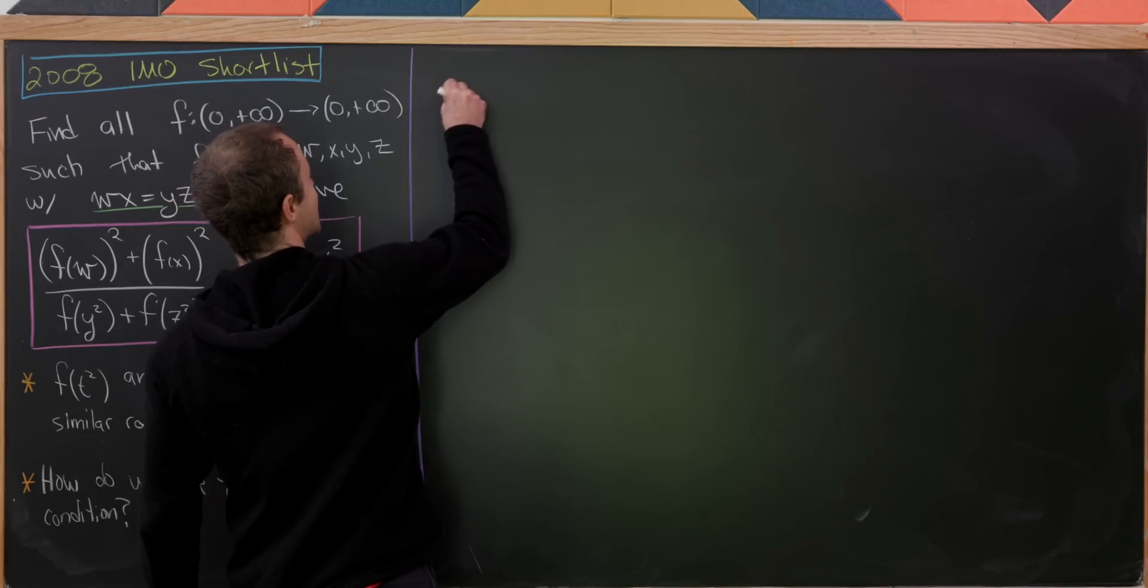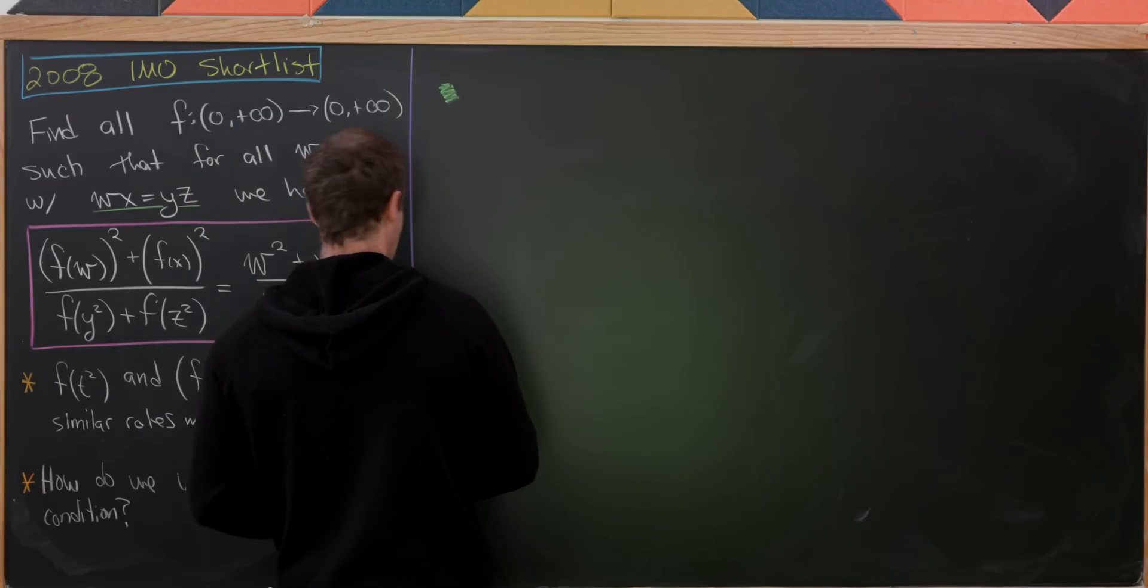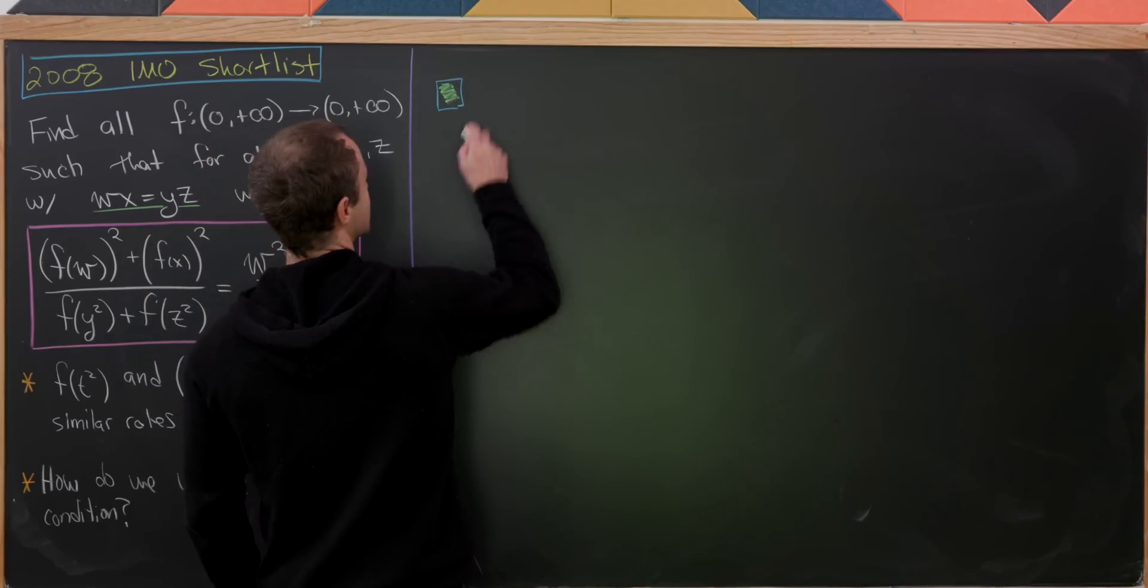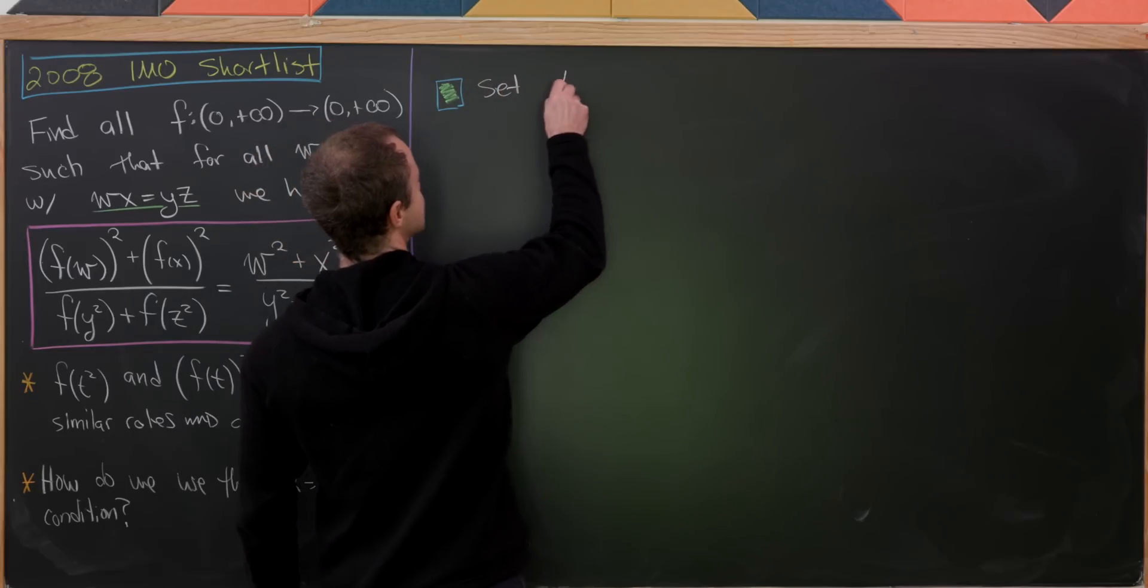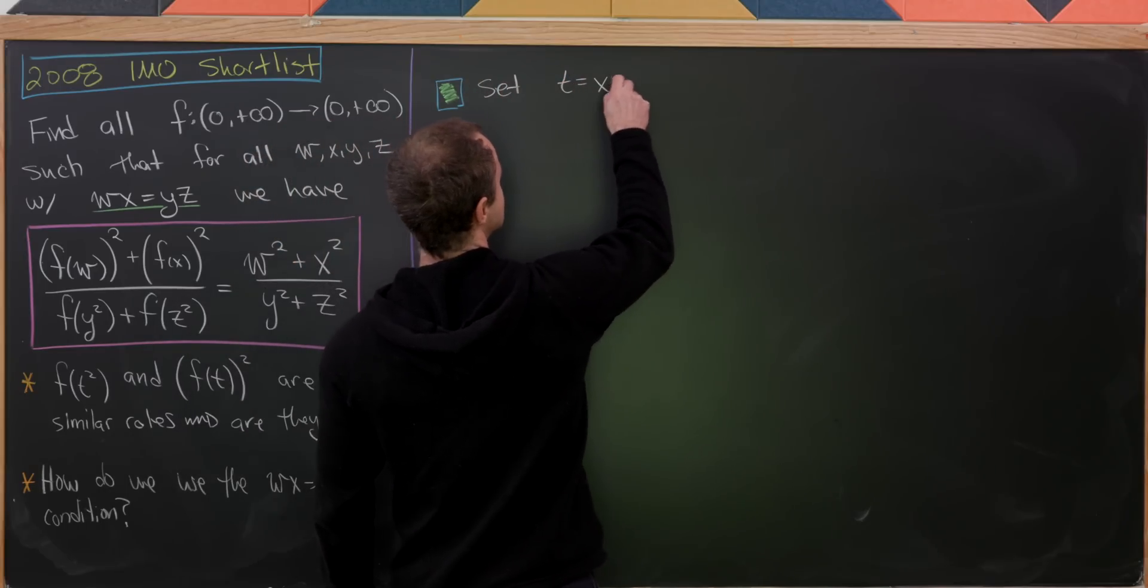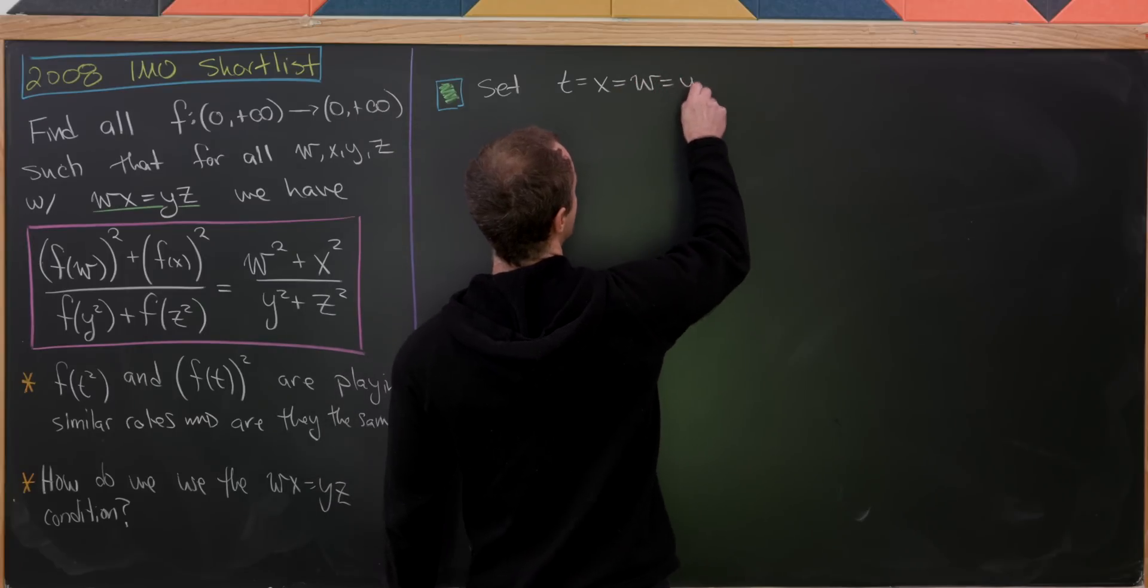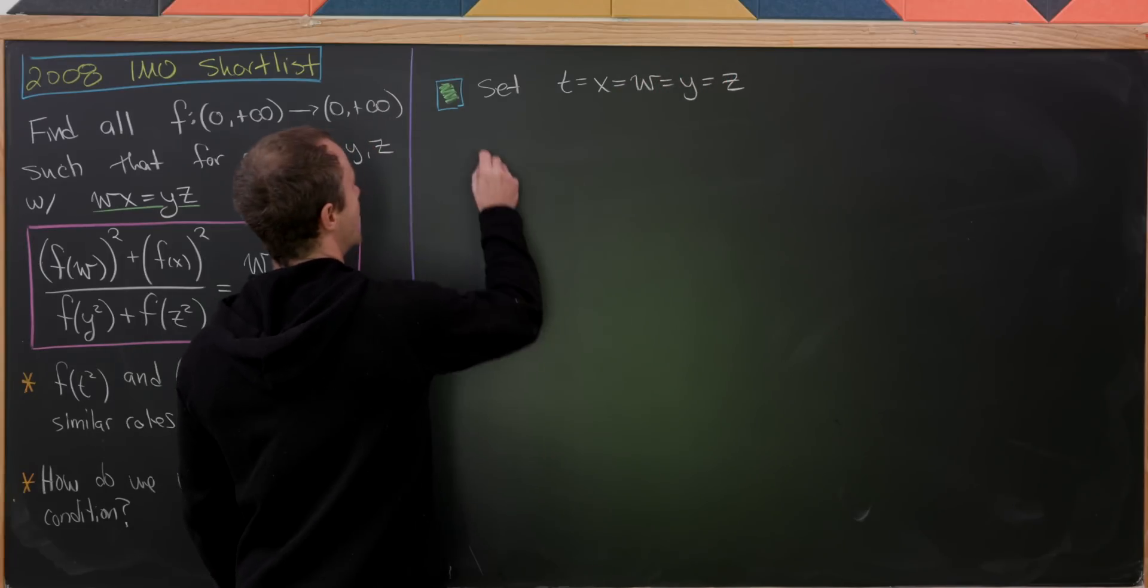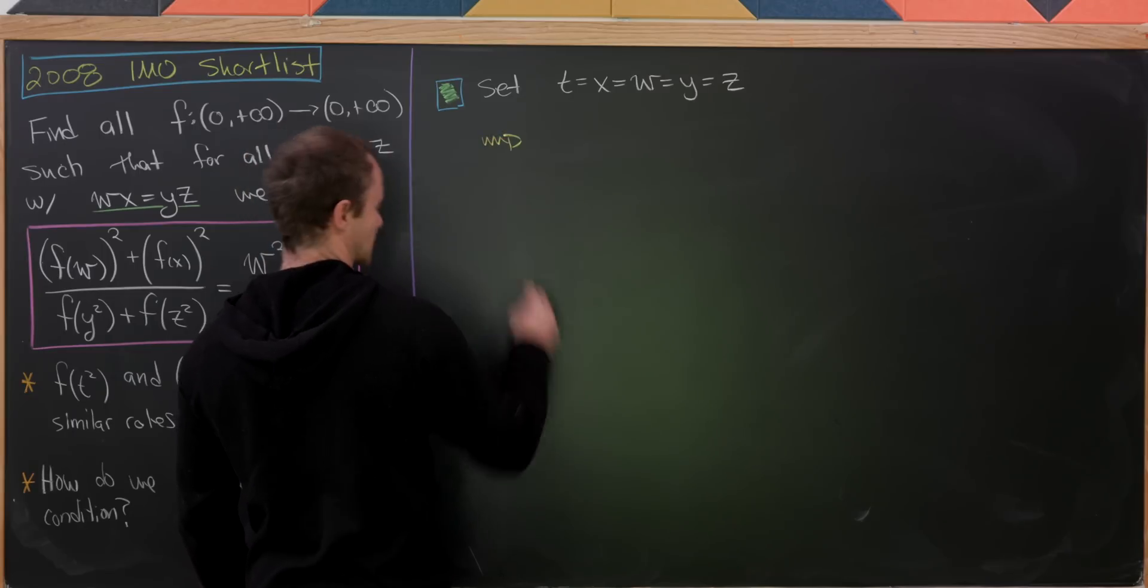So this is actually fairly easy to prove. All we'll have to do is set all of the variables equal to each other. So let's set t equal to x equal to w equal to y equal to z.